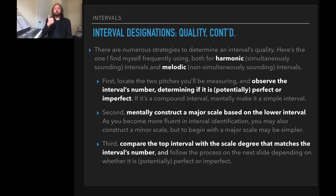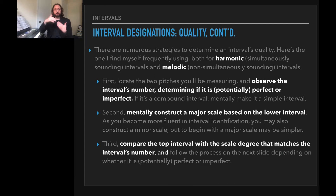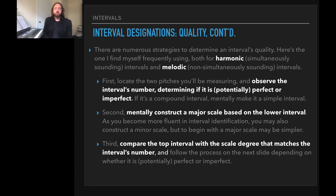If you have a different strategy, that's fine — we'll talk about another strategy as well, but this is the one I find myself using frequently. First, we're going to locate the two pitches that you'll be measuring and observe the interval's number, determining if it is potentially perfect or imperfect. So that's step number one: is it a unison, second, third, fourth, fifth, sixth, seventh, or octave — and if it's compound, we can reduce it down.